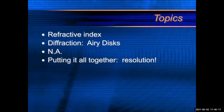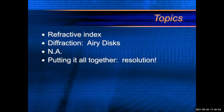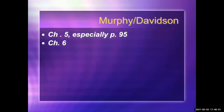These are the topics I'm going to cover — a nice, dense, nutritious meal, if you wish. Some of it are things you've heard of before, and some are brand new. I'm going to remind you about the refractive index, then talk about diffraction and specifically airy disks. Then we get to the star of the show: NA, numerical aperture on objectives. If you have the Murphy Davidson text, these are some places you'll find this information.